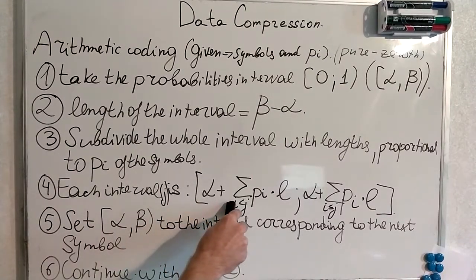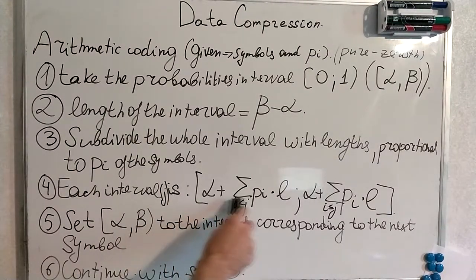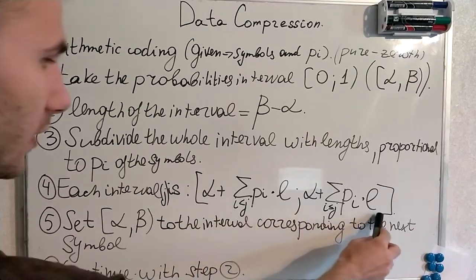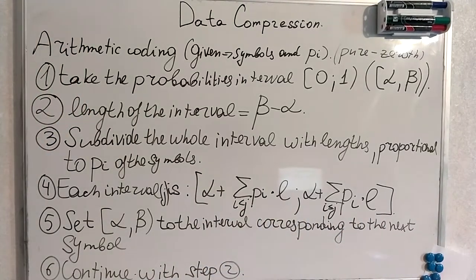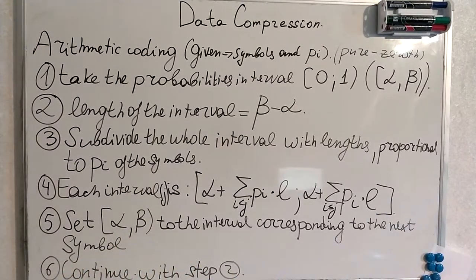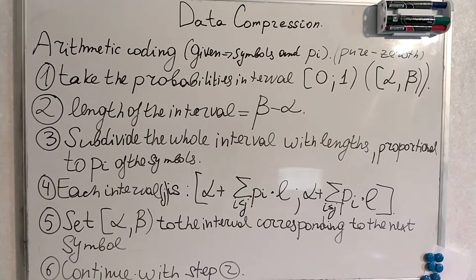This is the alpha, so the lower bound. And this is beta. This is the upper bound of the interval we are working with. So we set alpha and beta to the interval corresponding to the next symbol and continue with step 2.